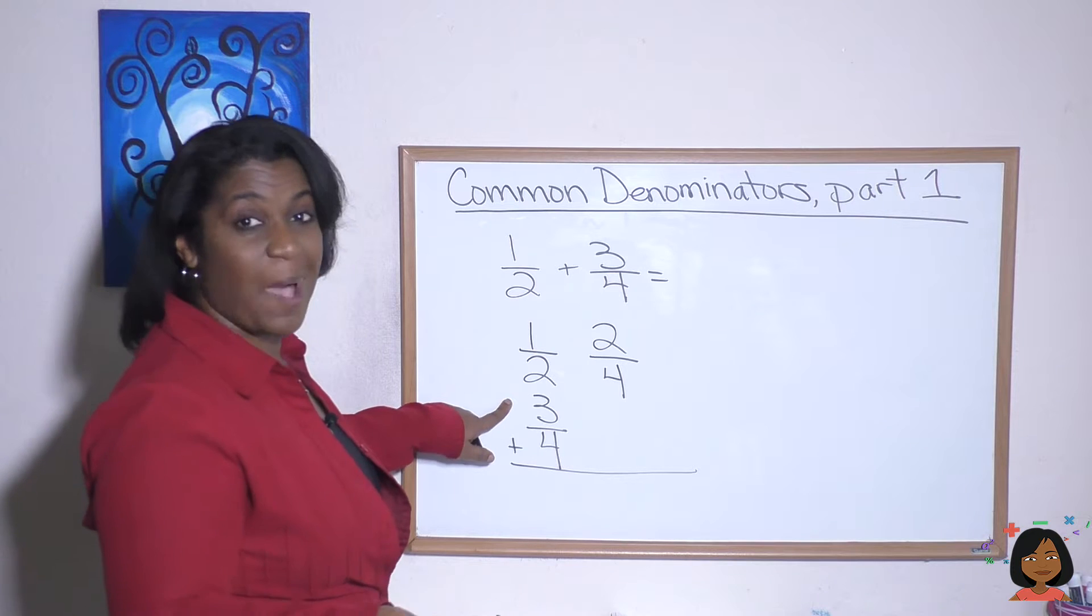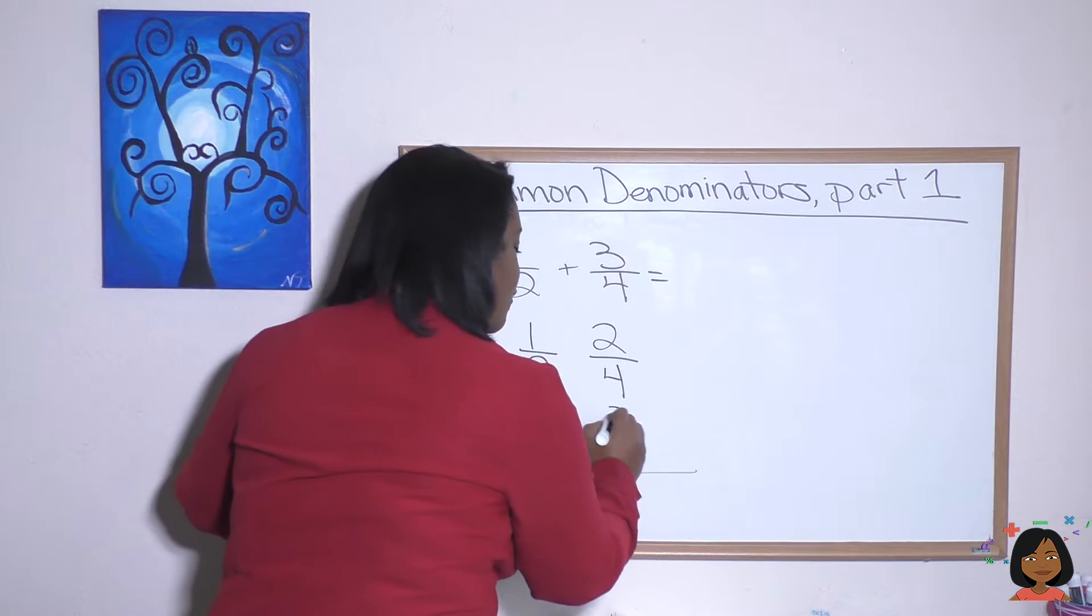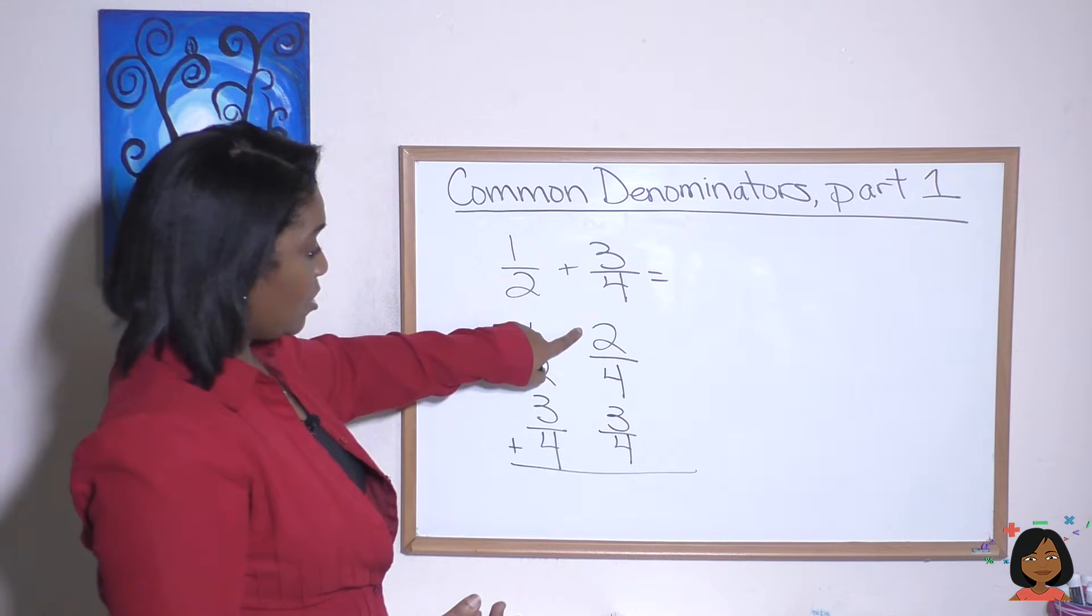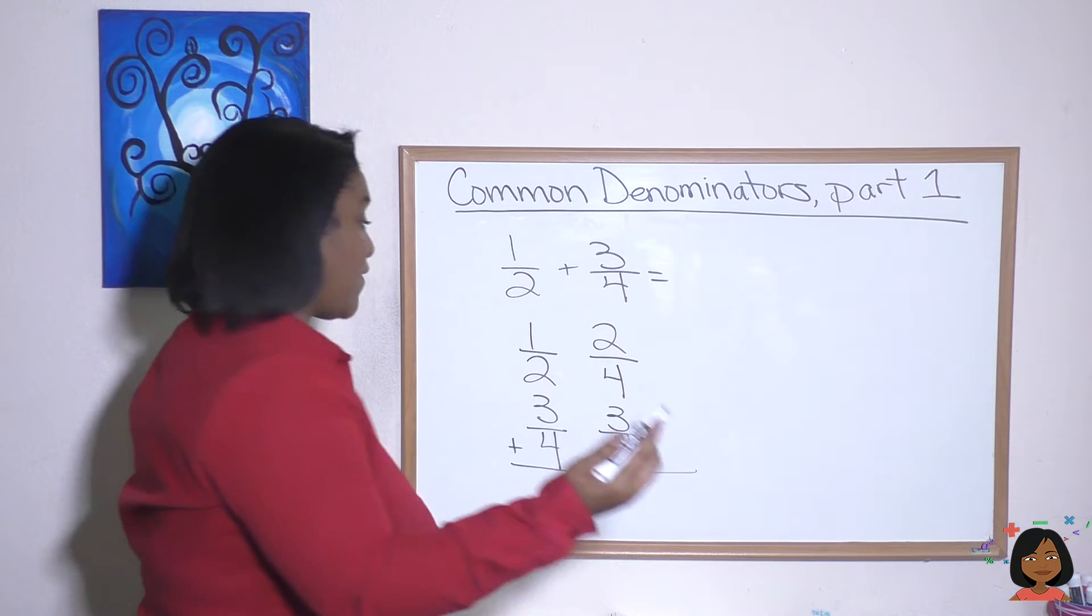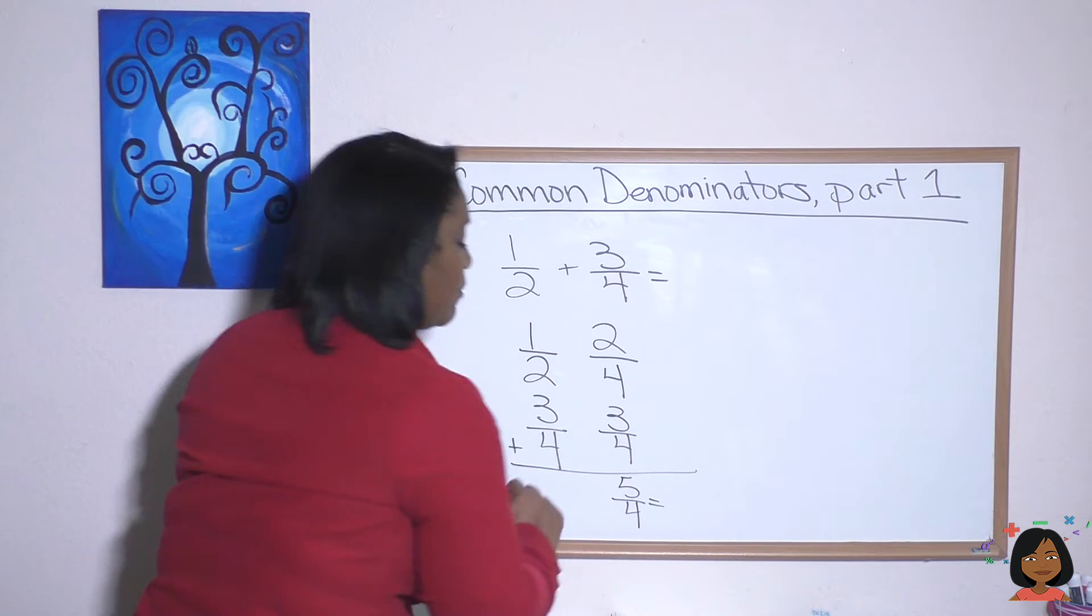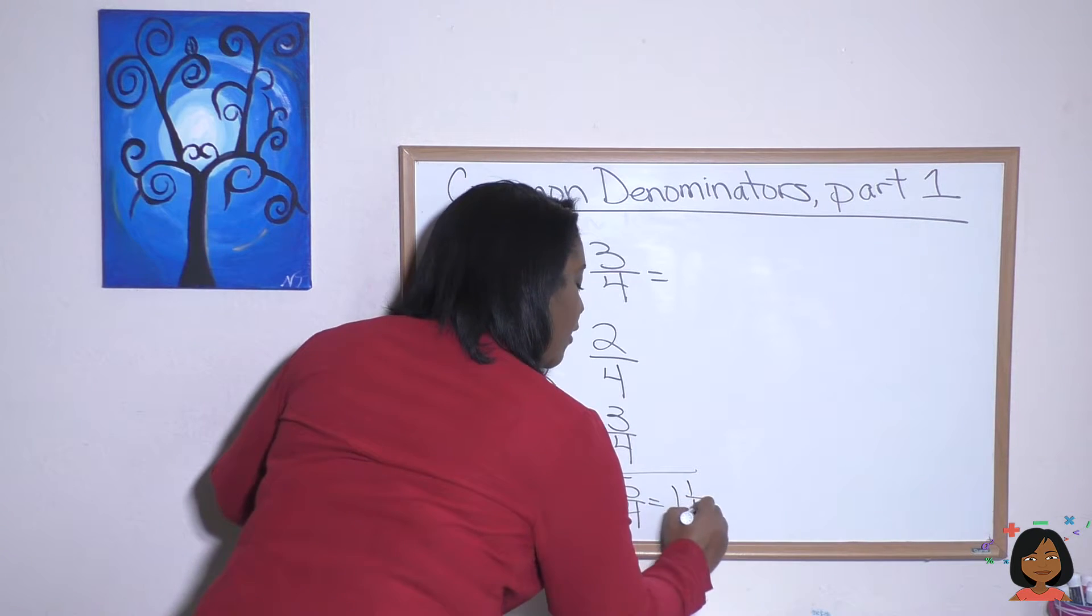Now we have a common denominator. I'm just going to rewrite this three-fourths over here. Now we can do our math because we have the same denominator. Two plus three is five-fourths, and we're going to turn that improper fraction into a mixed number, which is one and one-fourth.